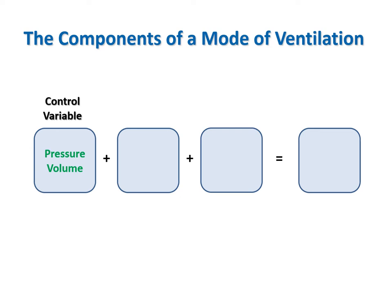The mechanical ventilator can only control one variable at a time—either pressure or volume—during the inspiratory phase. Actually, in volume control, the ventilator is controlling flow, but by historical convention it is called volume control.